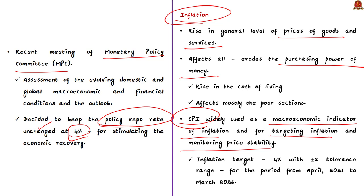Our central government also uses the Consumer Price Index to target inflation. For the period from April 2021 to March 2026, the government has notified 4% CPI as the inflation target. This 4% target is not rigid — we have a tolerance range of plus or minus 2%, so inflation can range from 2% to 6%. As long as inflation travels within this range, our economy is safe and inflation is under control.